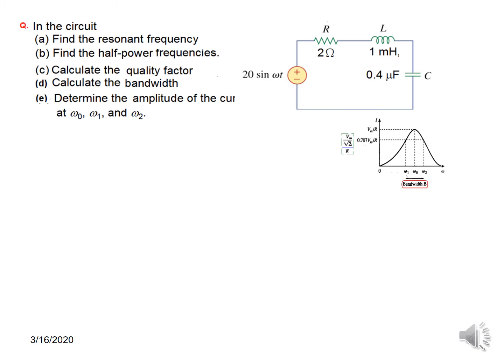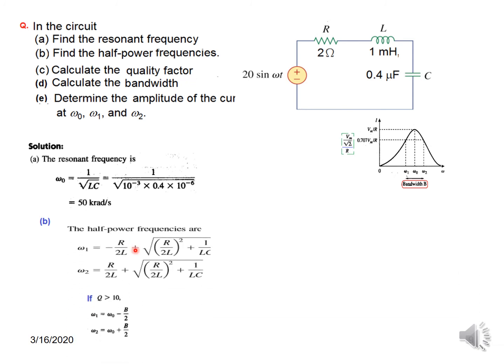Let's solve another example. For the given circuit, we have to find the resonant frequency, half-power frequencies, quality factor, bandwidth, and the amplitude of current at these three frequencies. Plugging into ω₀ = 1/√(LC), we get 5 krad/s. To find Q: Q = ω₀L/R — plugging in the values gives Q = 25. Since Q > 10, we can use the simplified half-power frequency formula.